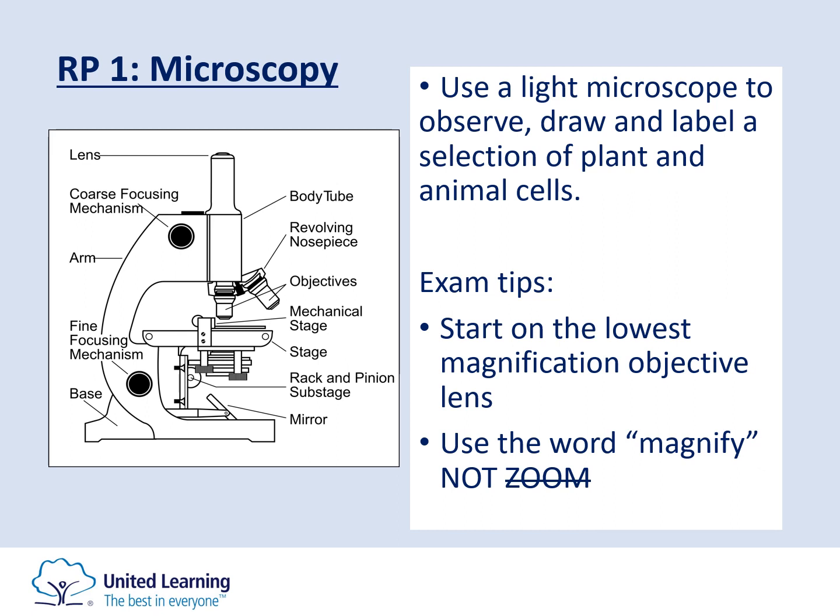Another exam tip: make sure you're using the word 'magnify' and not 'zoom.' If a question asks how to improve the image, one way is to increase the magnification by selecting a higher objective lens — so rather than using the 4x lens, you'd increase to 10x or 40x to look at the specimen more closely. Always use the word 'magnify,' not 'zoom.'